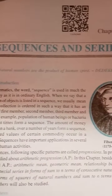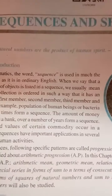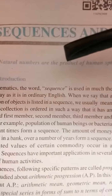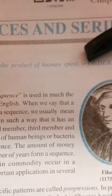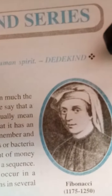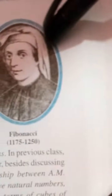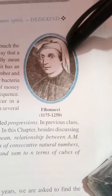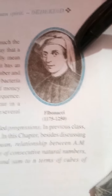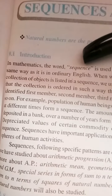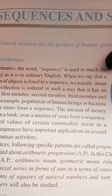Dear mathematics aspirants, right now I have the sequential series from chapter nine of mathematics of plus two level. Natural numbers are the products of human spirit, given by Dedekind. In mathematics, the word sequence is used in a specific way.